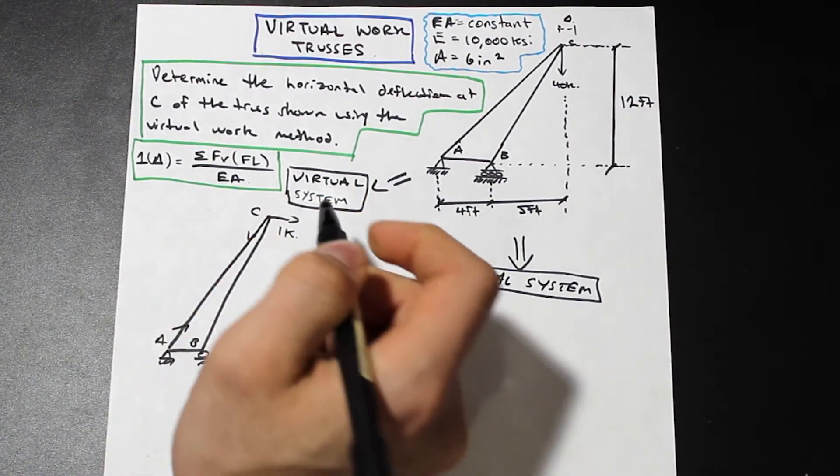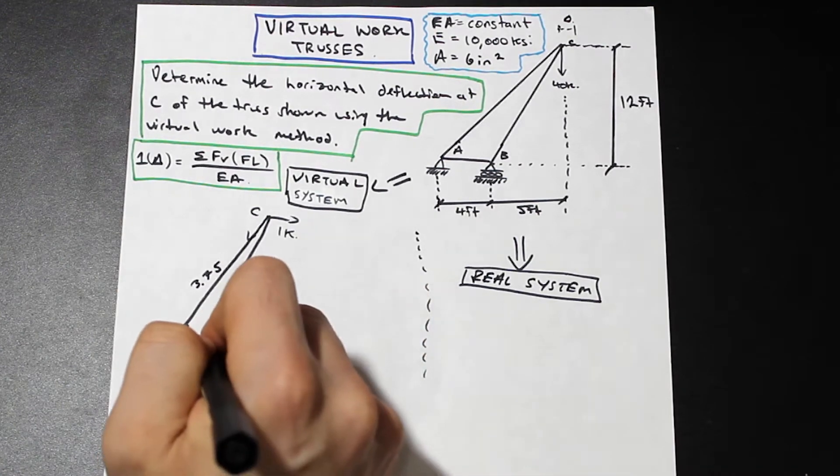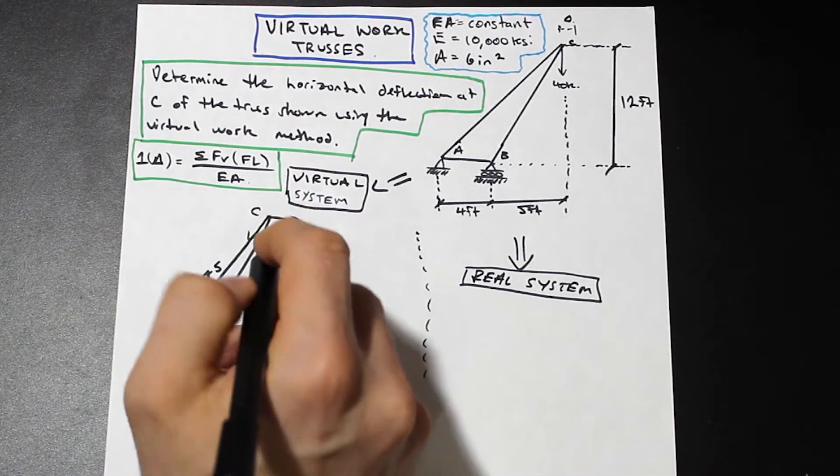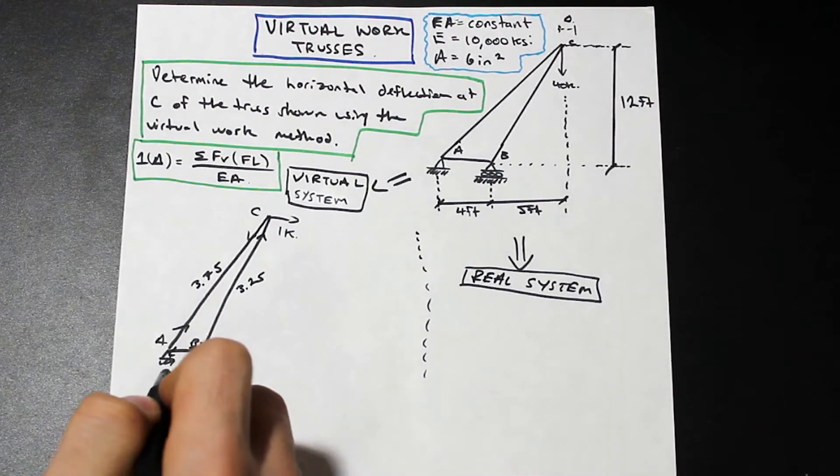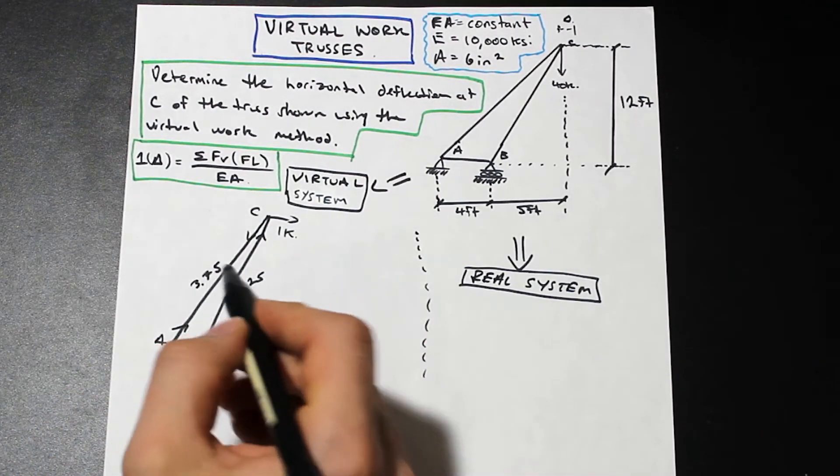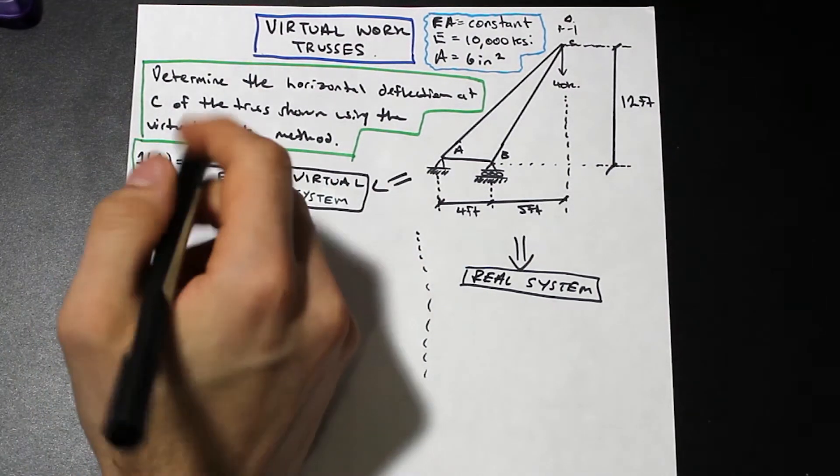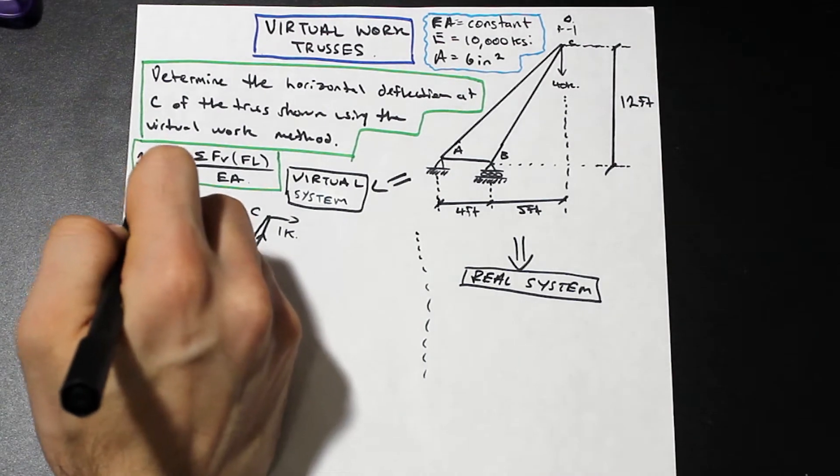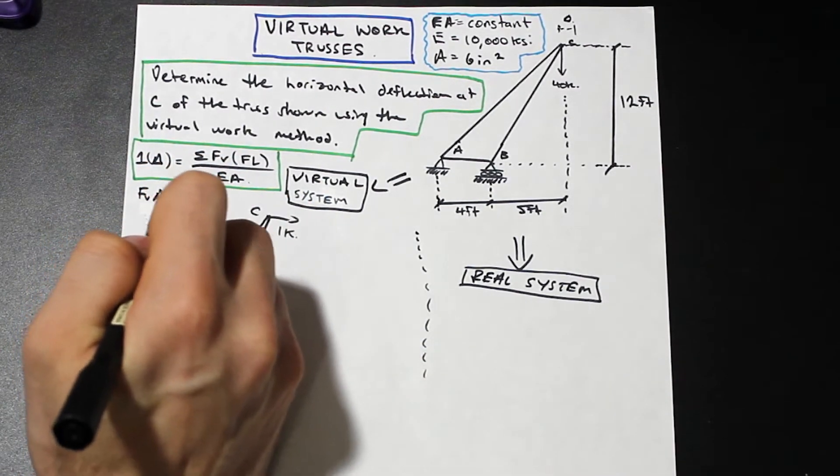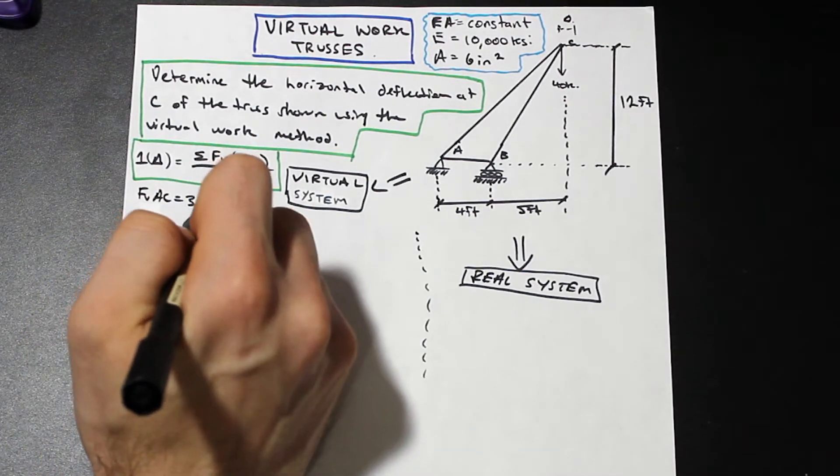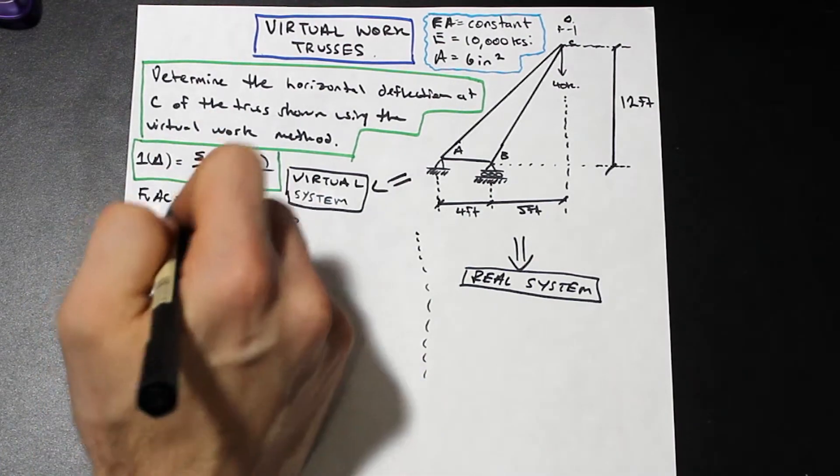I'm just going to write down what the values are. For AC, we have tension, we have 3.75 kip. And at BC we have compression here of 3.25. And at AB we have a compression of 1.25. For AB, I'm just going to write those down over here so it's a little more clear. For our virtual system, we have FV.